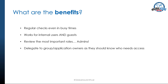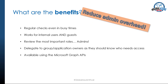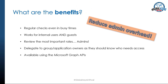Another benefit is that you delegate to a group or an application owner the task to review access for their members, because they should know better than you who should have access to their resources. For all the developers out there, access reviews are also available via the Microsoft Graph APIs. One of the major benefits for the IT team is the reduction of admin overhead — you don't need to create a new task or set a reminder in your calendar. You can set the review frequency as low as weekly and as far out as annually.